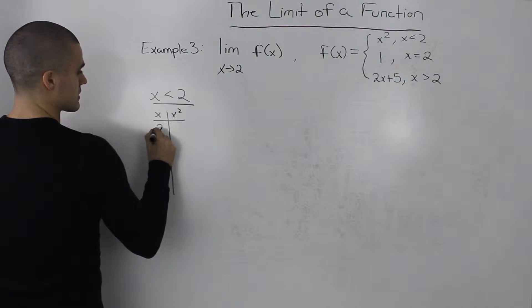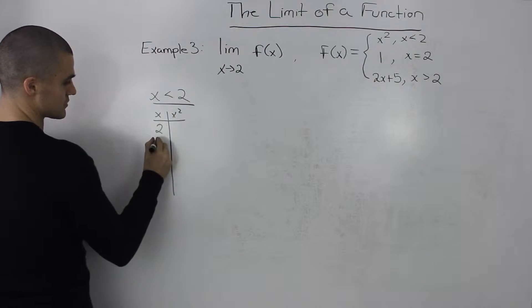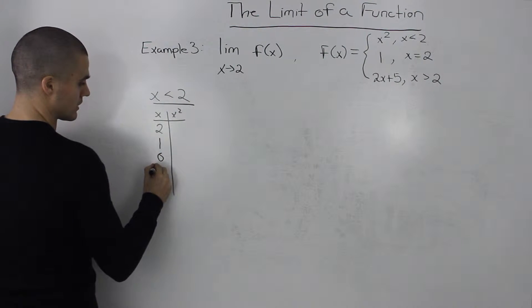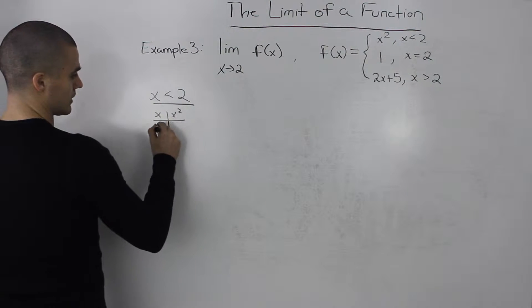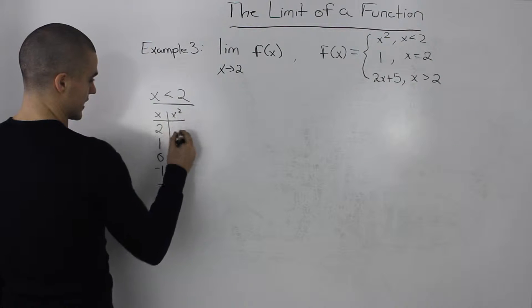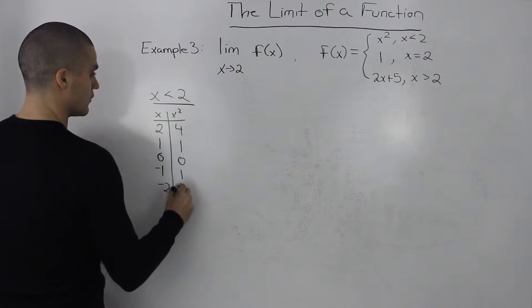So let's try 2. X has to be less than 2, so any number less than 2. Let's put 1, 0, negative 1, negative 2. So plugging these values into x squared will get 4, 1, 0, 1, 4.